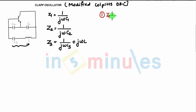Z1 plus Z2 plus Z3 should be 0, and second, the mode of Av should be greater than or equal to Z1 upon Z2. So applying the first condition, what we can say is the frequency of oscillations we are going to need to find out.